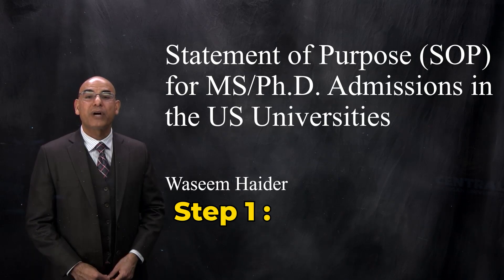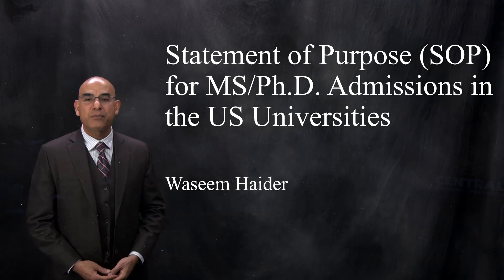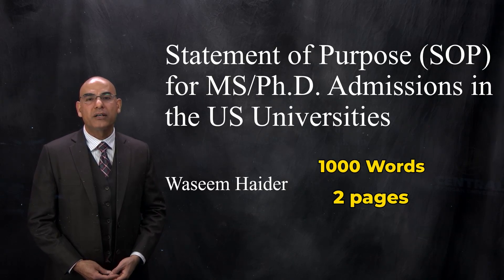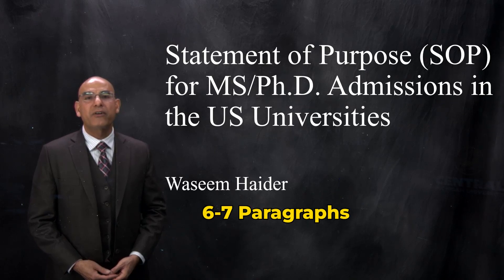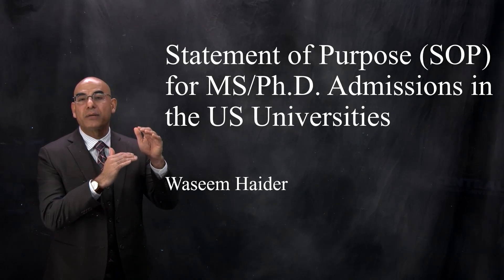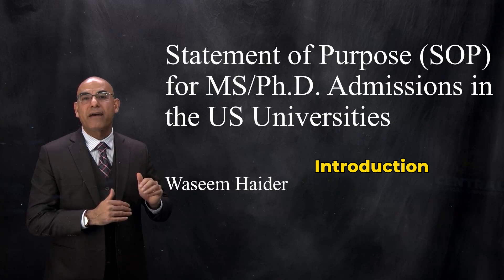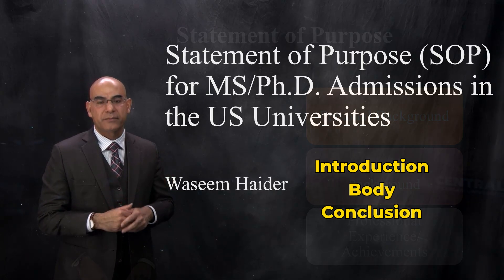The first step is to write an outline of the statement of purpose. In general, the statement of purpose is about 1,000 words, or about two pages long. It should include about six to seven paragraphs. The first paragraph is going to be the introduction and the last paragraph is going to be the conclusion, and in the middle you will have a body of paragraphs.